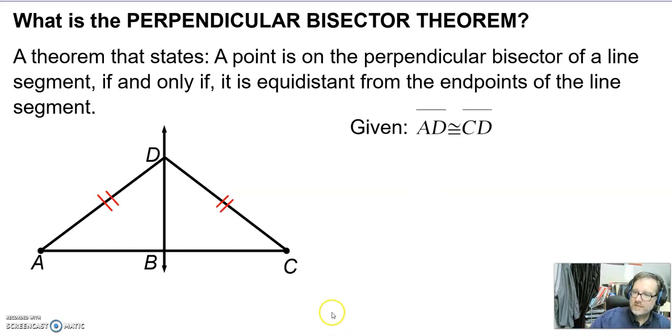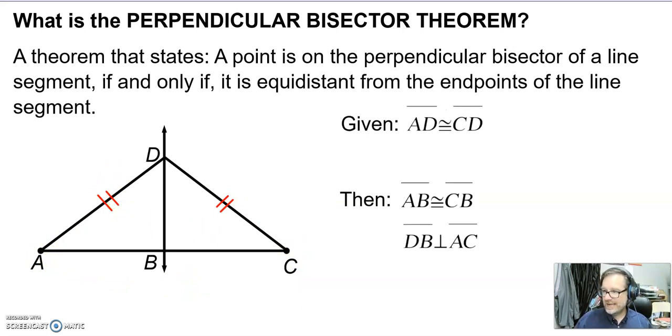The converse of this theorem says, if I give you a picture where the distances from the ends of a segment are equidistant, then this line has to be a perpendicular bisector. So we know AB has to be congruent to BC and DB is perpendicular to AC.